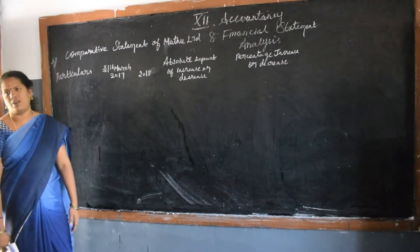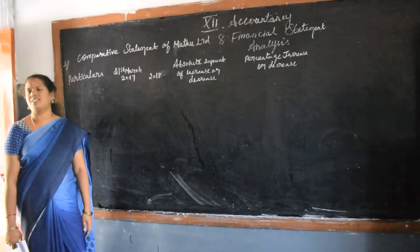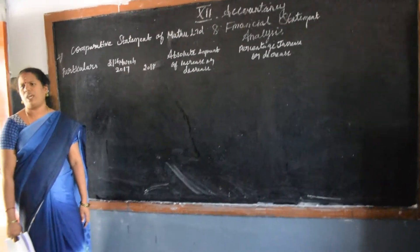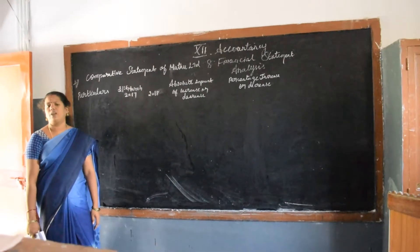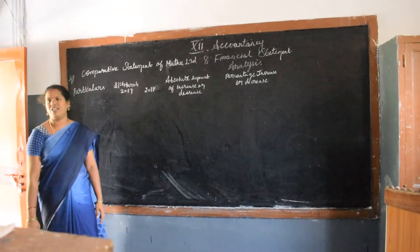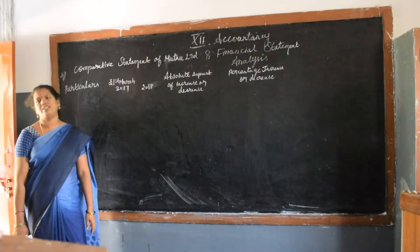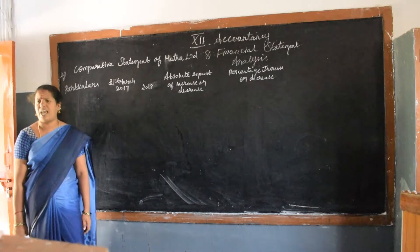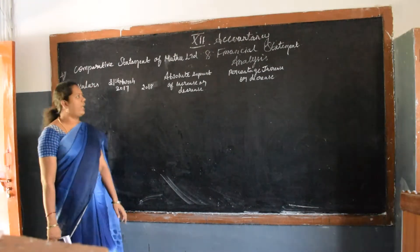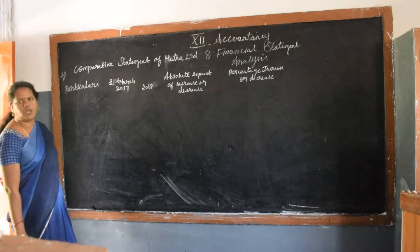We are going to continue with the last session. In the last session we talked about financial statement analysis. There are 5 methods to follow while preparing the financial statement analysis: the first is comparative, the second is common size, the third is trend analysis, the fourth is cash flow, and the fifth is fund flow analysis. We are going to continue with the comparative statements.